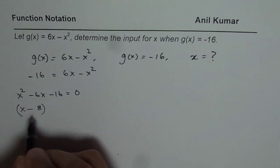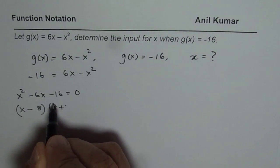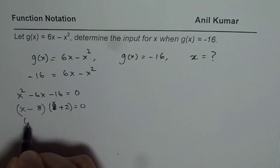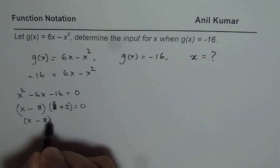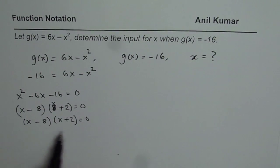So we could write this as x minus 8 times x plus 2. Let me rewrite this. We can write this as x minus 8 times x plus 2 equals to 0. That is how you factor it.